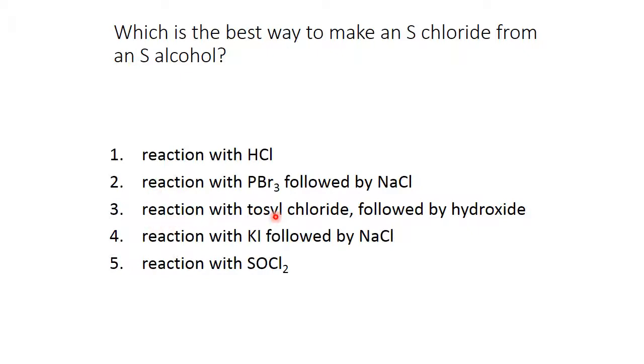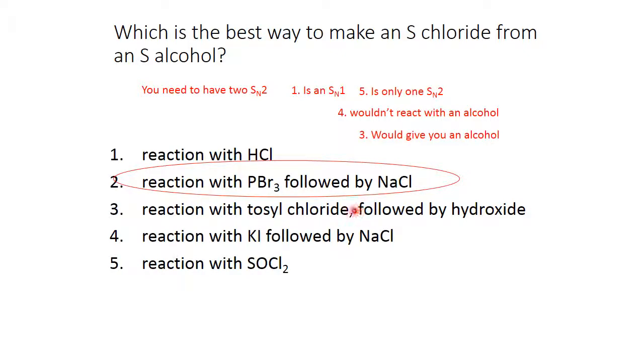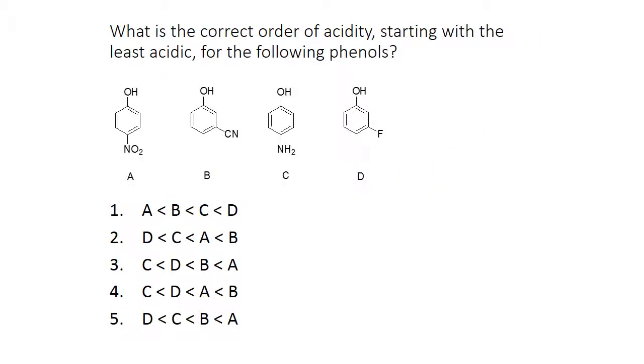If I react with tosyl chloride and then followed by hydroxide, I would get inversion to, I would take an S alcohol and it would be inverted to an R alcohol. It wouldn't give me an S chloride. If I reacted with potassium iodide, nothing would happen with an alcohol. No SN2 can occur on an alcohol. If I reacted it with thionyl chloride, what would you get? You would get the R chloride, not the S chloride. So the best choice here would be right here. One is an SN1. Five is only one SN2. Four wouldn't react with an alcohol. Three would give you an alcohol as a product. So the only one that is the correct one would be phosphorus tribromide followed by sodium chloride.